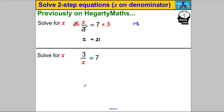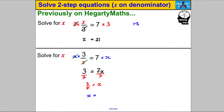If you multiplied both sides by X, the X on the left-hand side would cancel — there's an X multiplying and an X dividing — and you'd be left with 3 equals 7X. We know how to solve these: divide both sides by 7 to get X on its own, giving X equals 3/7. We'd rewrite that with X on the left. So we multiply both sides by X to get X off the denominator and solve.